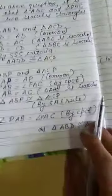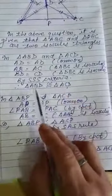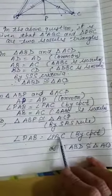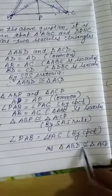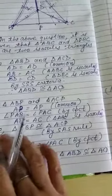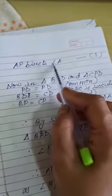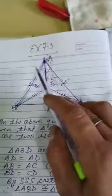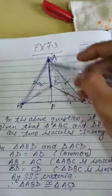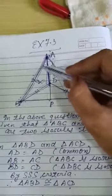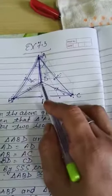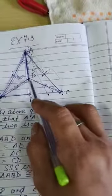In the third part, we have to prove that AP bisects angle A as well as angle D. From the first part, we proved triangle ABD congruent to triangle ACD. So angle PAB equal to angle PAC by CPCT from part 1. Therefore AP bisects angle A — meaning AD is a bisector of angle A.